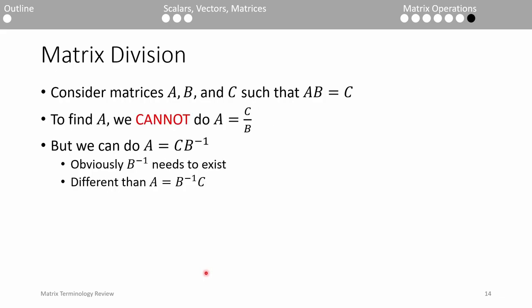So far, we've done addition, subtraction, and multiplication, but matrix division doesn't exist. Instead, you multiply it by the inverse. To find A, we multiply C by B inverse. Because matrix multiplication is not commutative, we generally cannot do A equals B inverse times C.